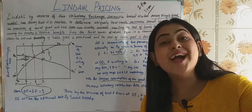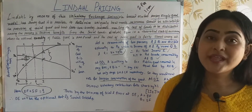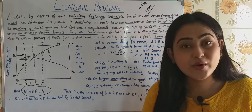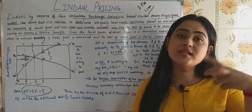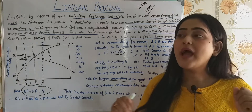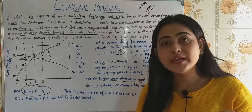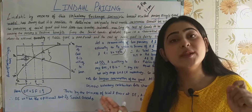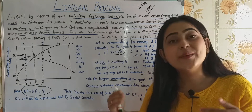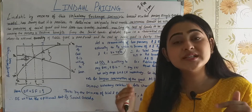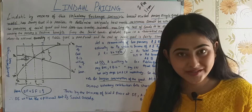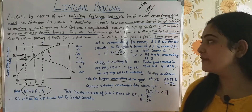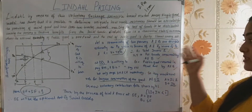When willingness to pay exceeds the actual price, individuals can purchase more of the commodity. For example, if I have a 100-rupee budget and the price of a commodity falls to 80 rupees, that 20 rupees I can use to purchase additional units. So that is what is being said here. Let's now discuss the formal setup.